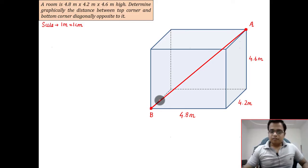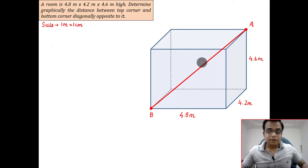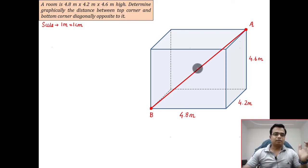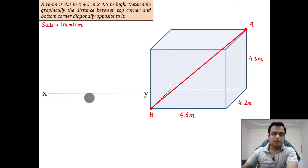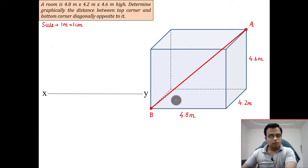If I can join a line joining A and B, it would be this red colored line and you need to find the true length of this line, not by math but with the help of engineering graphics. Here is the idea: draw an XY line and look at this from the front.